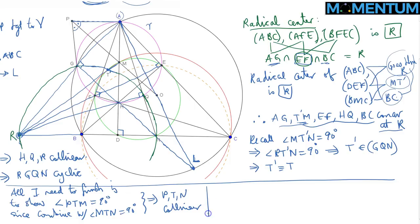Let me establish one more circle: the circumcircle of P, G, M, A. At G and at A we have tangents to gamma, so angle PGM = 90 degrees and angle PAM = 90 degrees. These two right angles subtended by PM imply that PM is the diameter of the circumcircle of P, G, M, A.